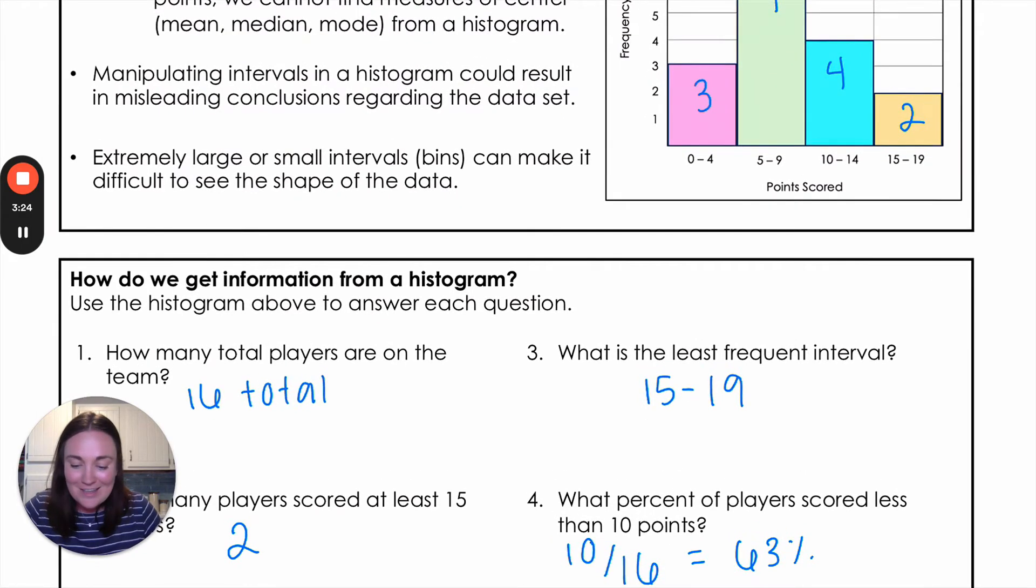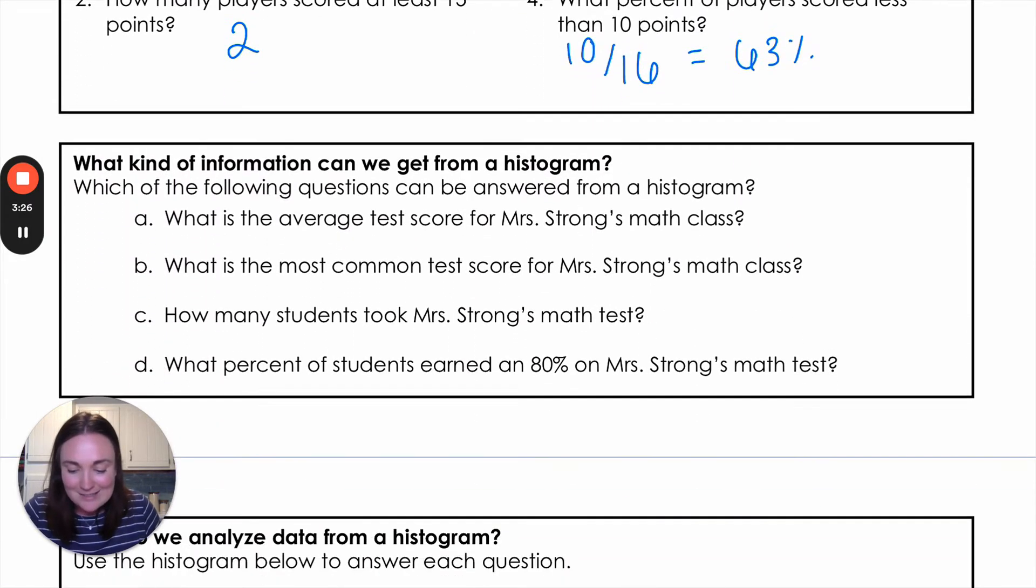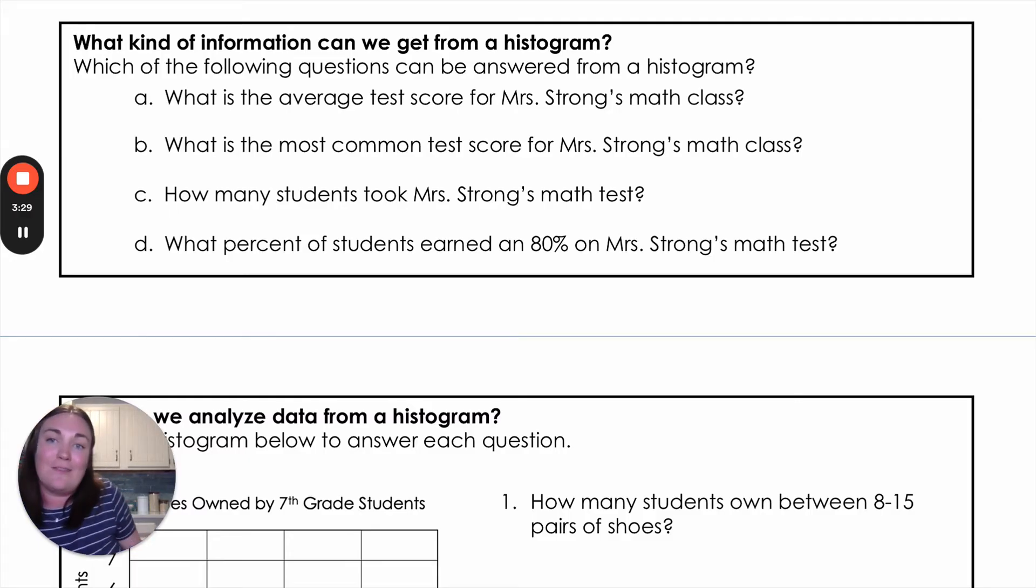Okay, let's look at some other kind of questions that they can ask us. So another question they'll ask is what kind of information can we get from a histogram? So in this one, they want to know which of the following questions can be answered using a histogram. The first one, what's the average test score? That's looking for one of those measures of center. So we need all the individual ones to add them together and divide. So we cannot find that using a histogram. Letter B is what is the most common test score? So again, we don't have each of the individual test scores when we're looking at a histogram. So we can't answer that question.